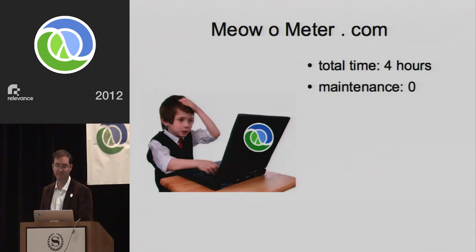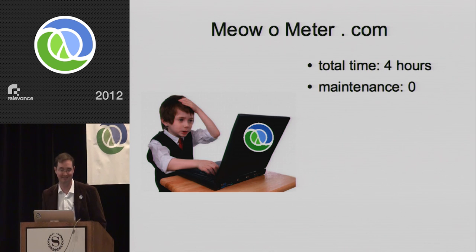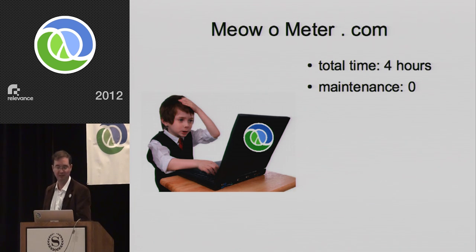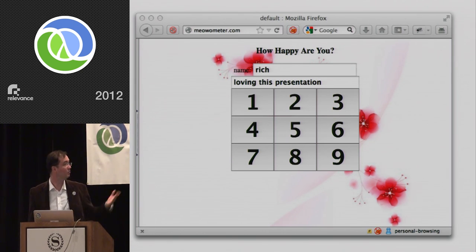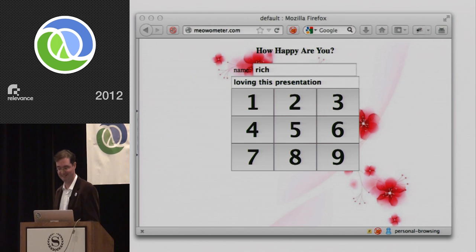With Amazon and Heroku, we can handle that. From the time I bought the domain — Meow-meter.com, because all the good ones are taken — to when it was up and running was a total of four hours, and really only about half of that was technology. The UI is simple: all it asks for is your name, the context of what you're doing, and a big button for how happy you are.